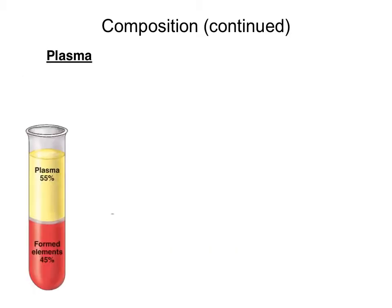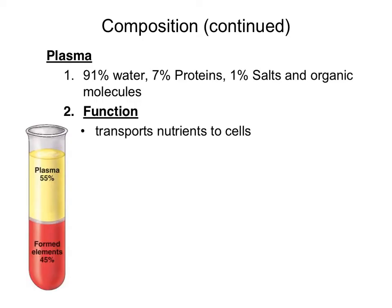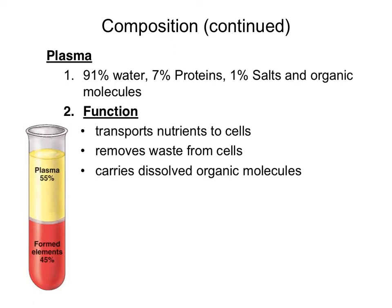The second part of blood is called plasma. Plasma is the liquid part of blood and is mostly composed of water, some proteins, some salts, and organic molecules. Plasma provides a variety of different functions. The first function is that it transports nutrients to cells. The second function is that it removes waste from cells. The third function is that it carries dissolved organic materials, such as glucose.